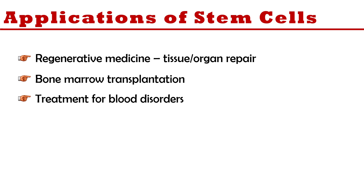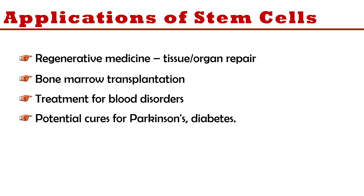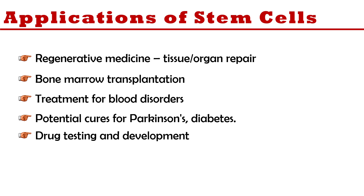Third, treatment of blood disorders — many blood disorders can be treated using stem cells, because stem cells can control the population of blood cells. Fourth, stem cells have potential to cure diseases like Parkinson's and diabetes, in which specific cells degenerate — stem cells can be used to regenerate those cells. Fifth is drug testing and development — stem cells can be utilized in research to test the effect of various drugs on cells. These are the main applications of stem cells.